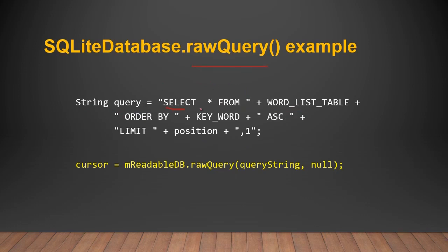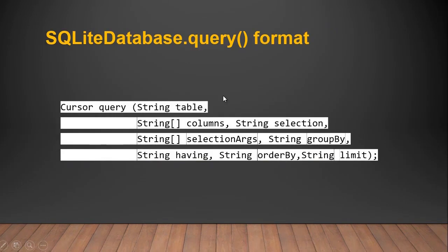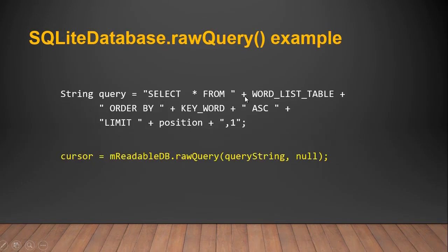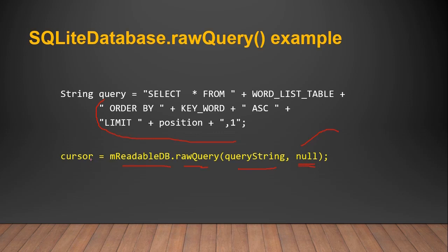An example of rawQuery: SELECT * FROM wordless table, ordered using ORDER BY ascending or descending. You can also pass a LIMIT to limit the number of rows returned. The db readable object calls the rawQuery method, passing the query string. Pass null if you don't want data filtered by a condition. It returns a subset of your table as a cursor.